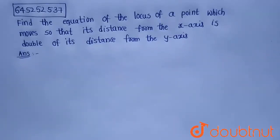Hello everyone. Today's question is: find the equation of the locus of a point which moves so that its distance from the x-axis is double of its distance from the y-axis.